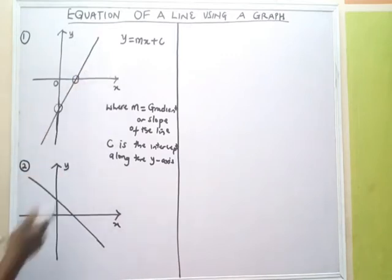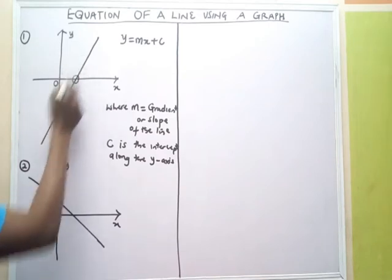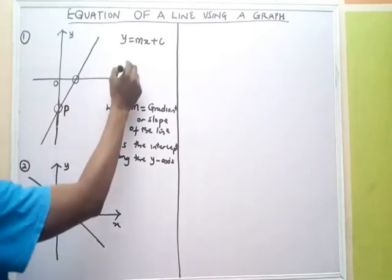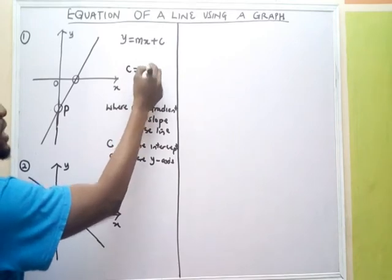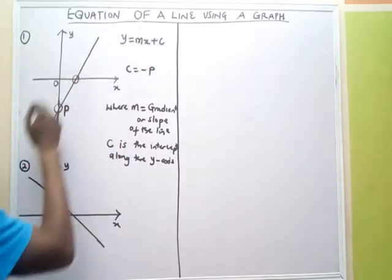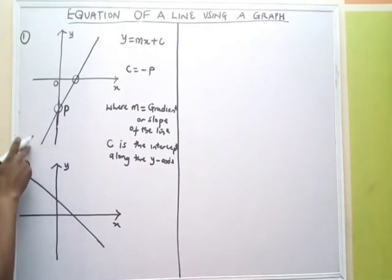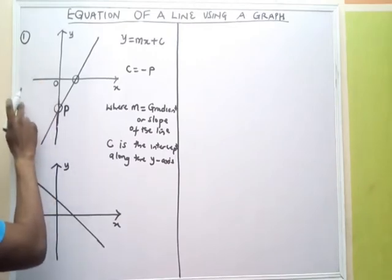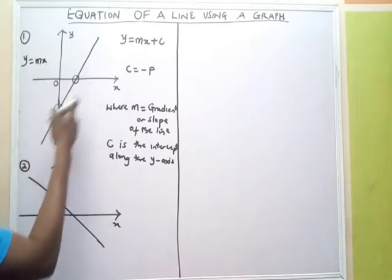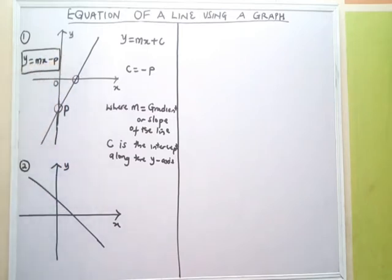Now, if you look at this graph, let's assume this point is p. At point p, the point is on the negative side of y. So that shows that the intercept here, c, is negative p. My gradient is positive because it is moving from the top right to the bottom left. So the equation for this line would be y equals mx minus p.